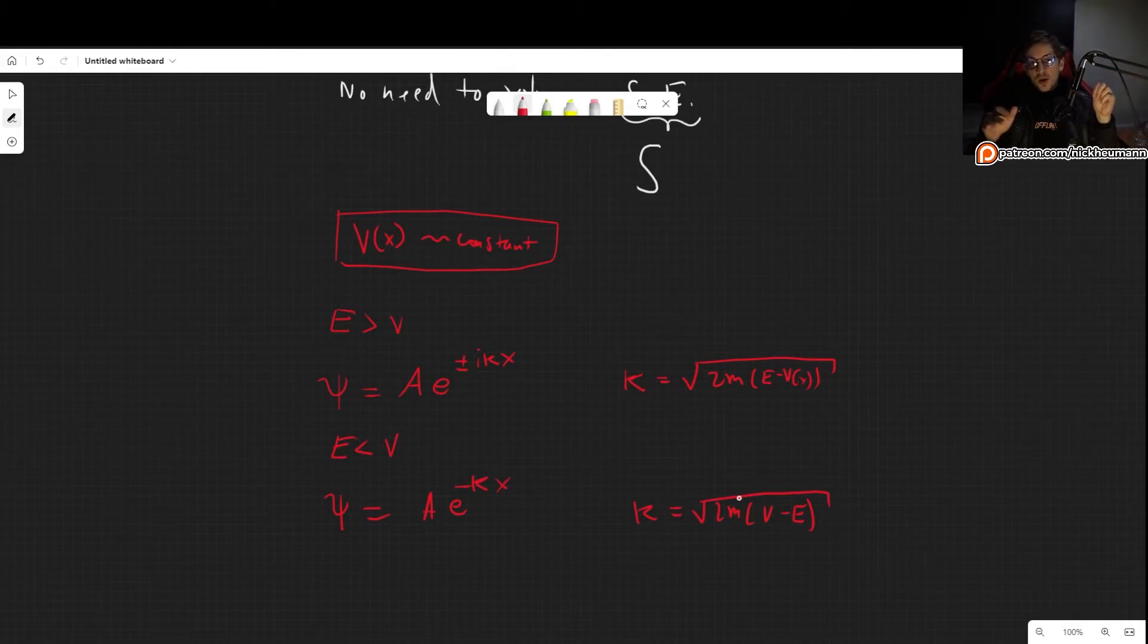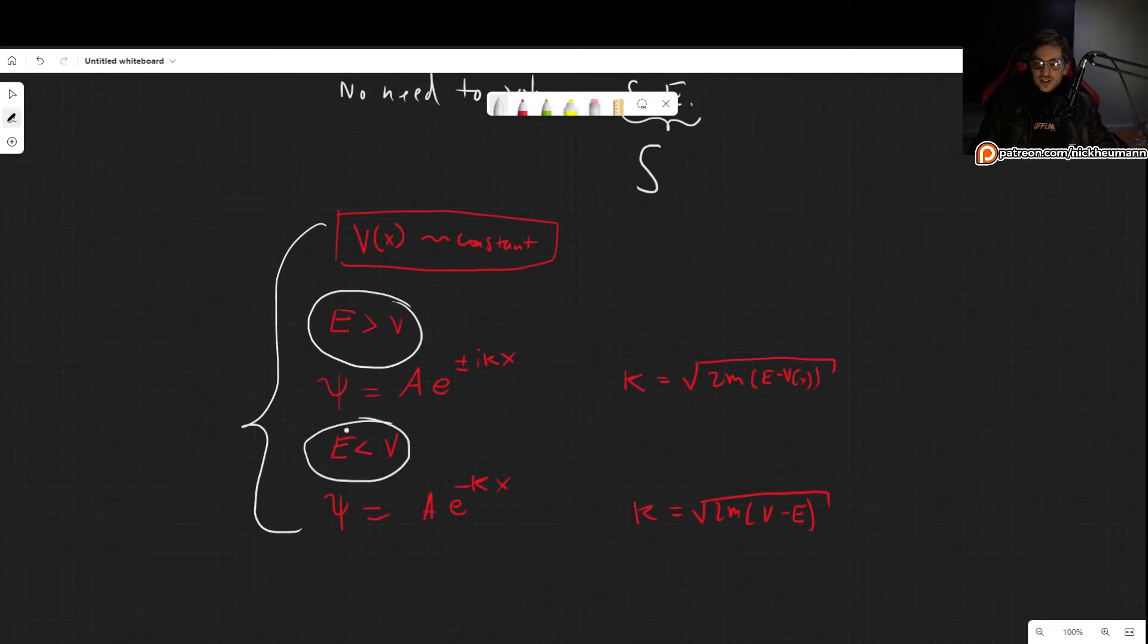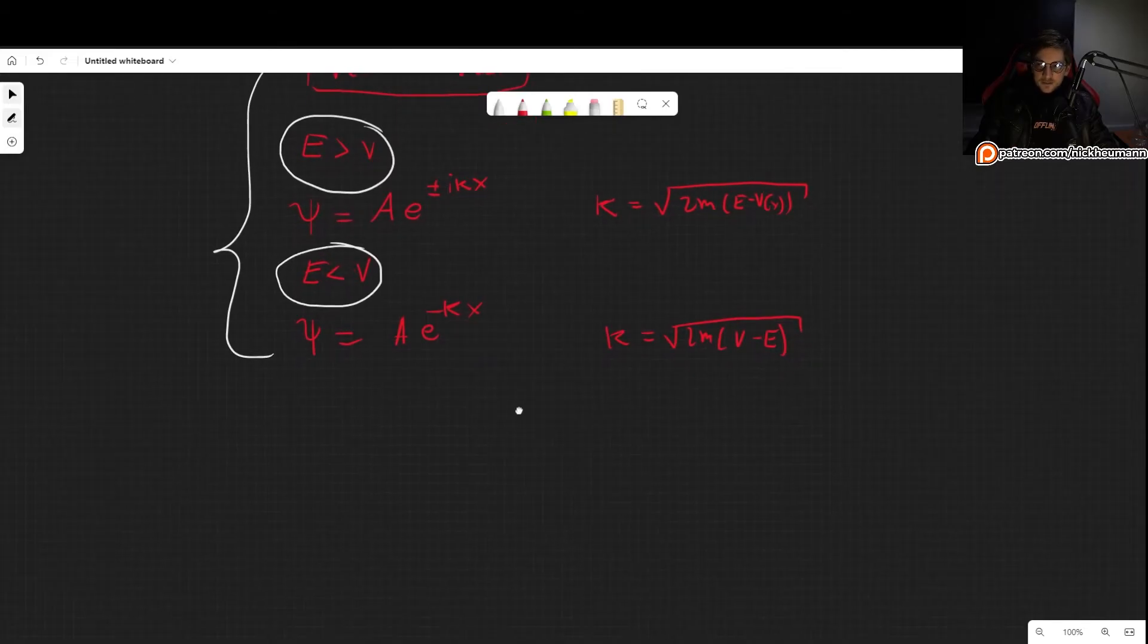And the WKB approximation will treat these two slightly different. However, in both of these cases, basically, whenever we are dealing when the energy is greater, when the energy is smaller, it will be relatively simple. And that will not be much of an issue. However, when we get to the point where the energy is comparable to the potential, but whenever they are, basically, when we transition from one region to the other, we have to go through the point where the energy is basically the same as the potential. And there, our analysis will require quite a bit more complexity. And that will be difficult.